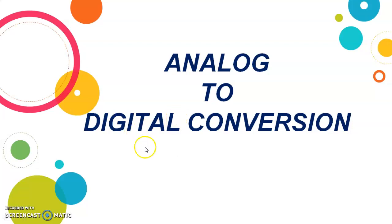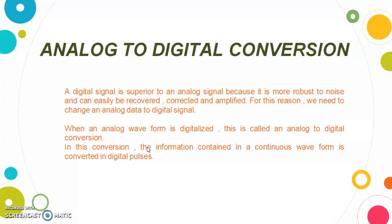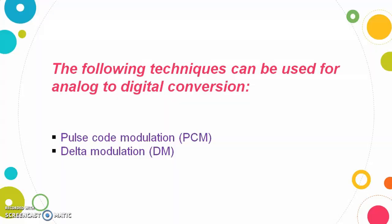Analog data is a continuous stream of data in waveform, whereas digital data is in the form of discrete data. To convert an analog wave into digital data, we use basically two types of techniques: one is Pulse Code Modulation and the second is Delta Modulation. In this video we will cover Pulse Code Modulation; for Delta Modulation I will make another video.